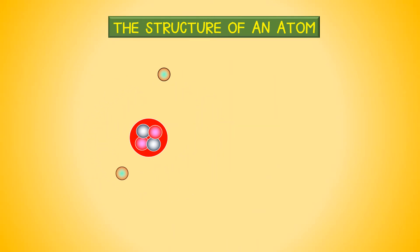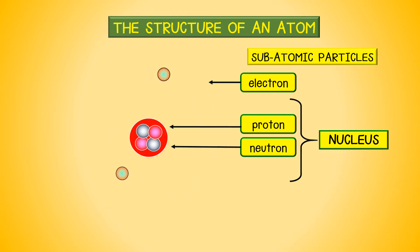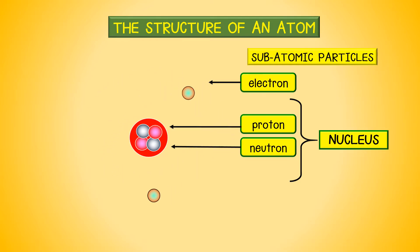An atom is made of smaller parts. Each part of an atom is called a subatomic part because they are smaller than the atom. There are three subatomic parts to an atom. The center of the atom is called the nucleus. The nucleus of the atom is made of protons and neutrons. The electrons spin around or orbit the nucleus of the atom.